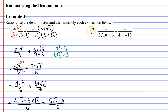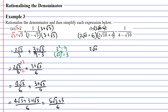Now let's move on to question B. We have two fractions and this time we're subtracting them. Both denominators have two terms. For the first fraction, we're multiplying the whole expression by something almost the same — two root ten — except instead of plus it's going to be minus six. Remembering we need to multiply the numerator by the exact same thing: two root ten minus six times one gives us two root ten minus six.